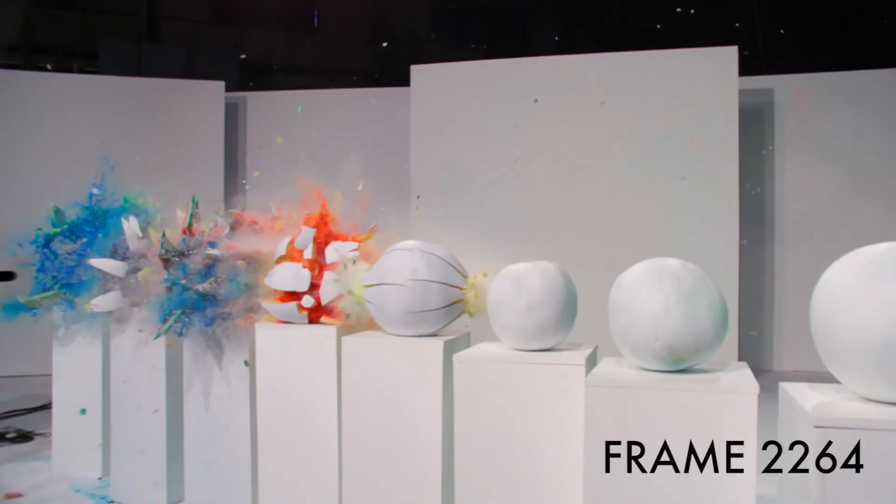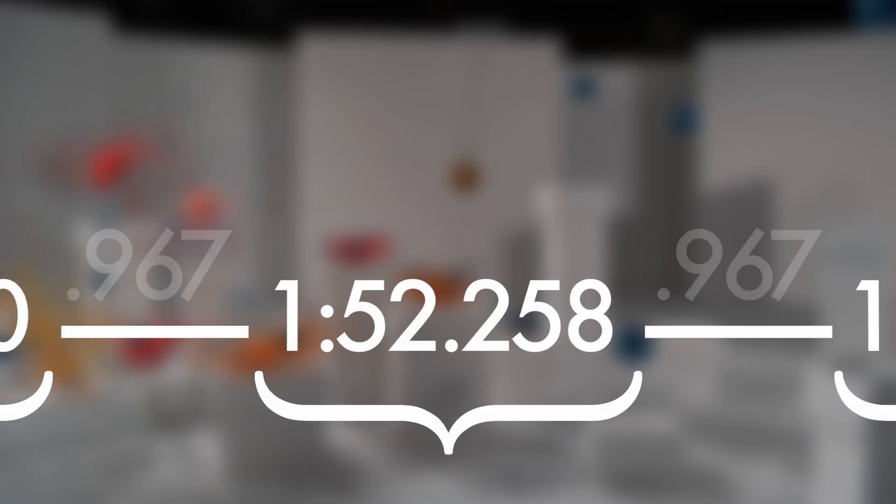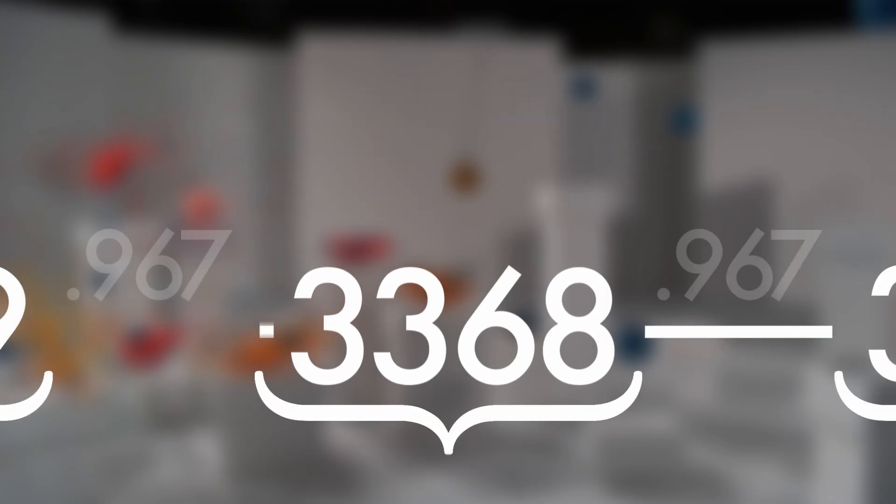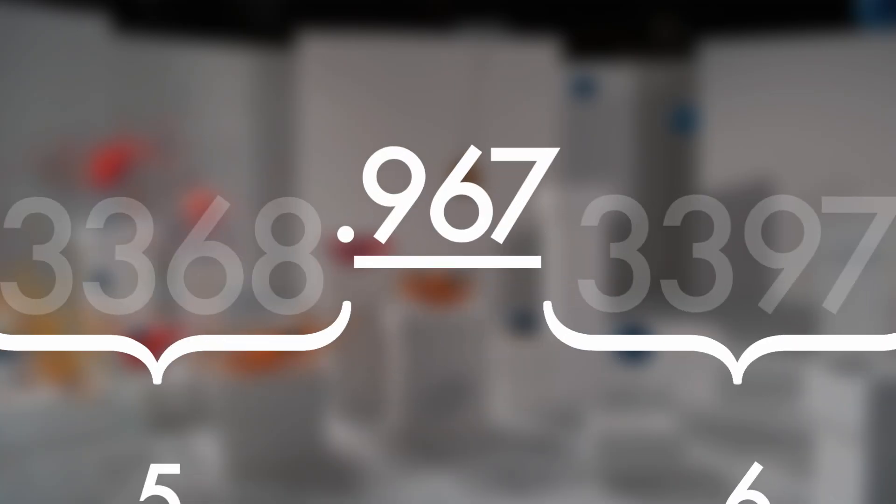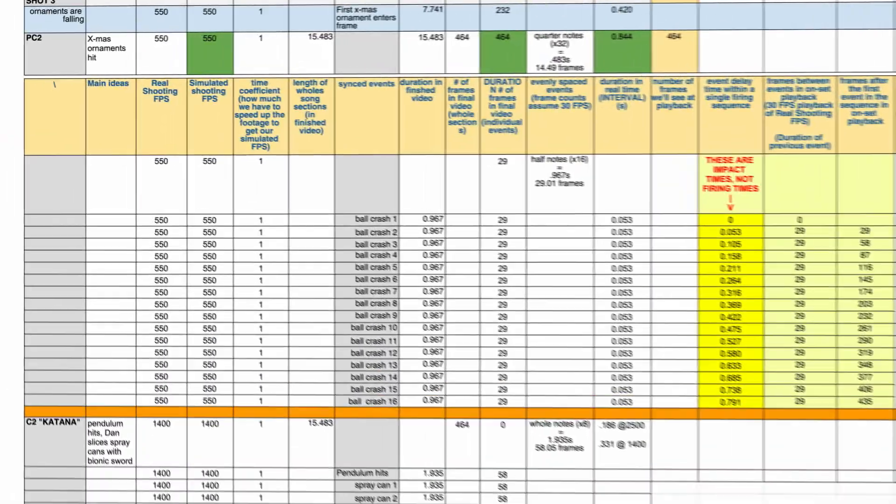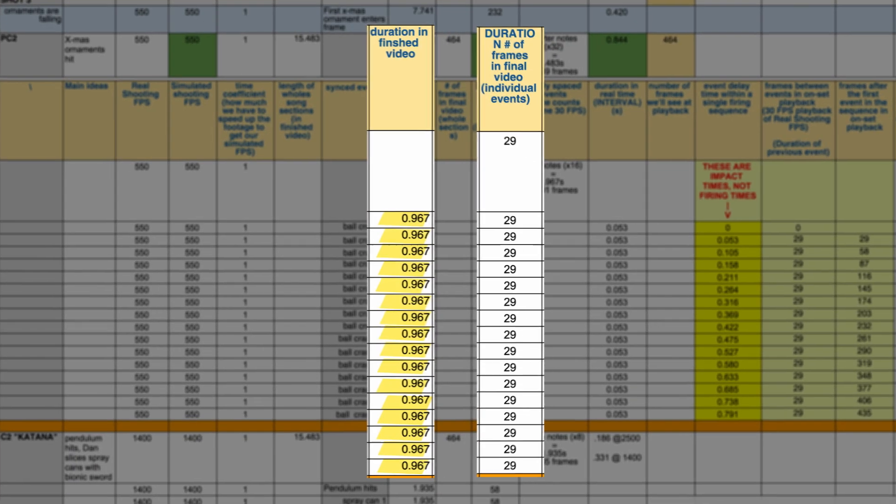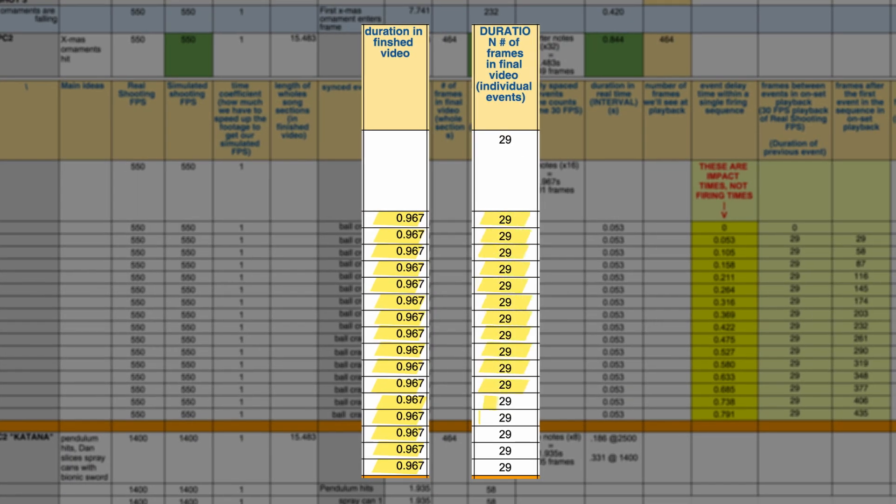So if we look back to the impact times we can translate those into frame numbers. If we look at the duration of each beat we can figure out how many frames each beat is, and so you see here that's 29. So okay, at this point we have determined this much: each beat of the song is 0.967 seconds long and that'll be 29 frames of the finished video.